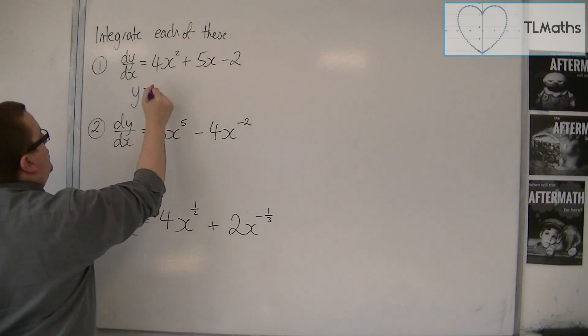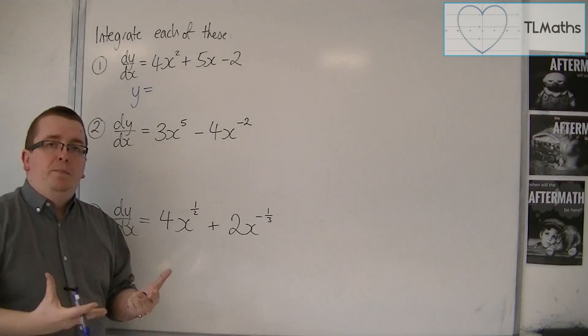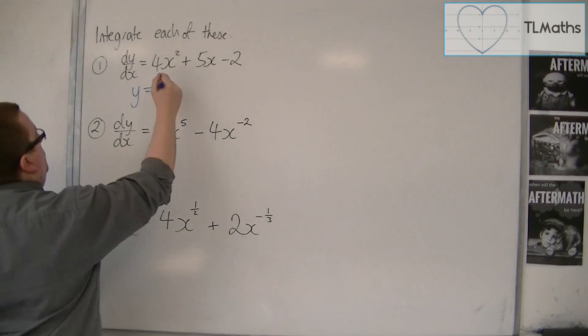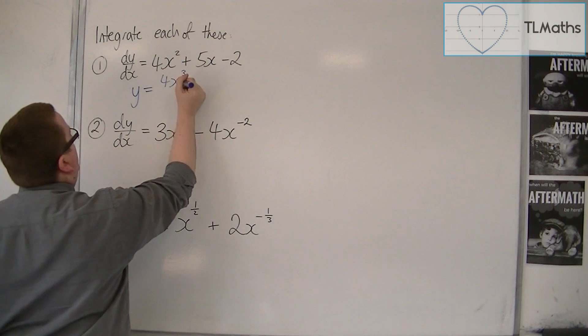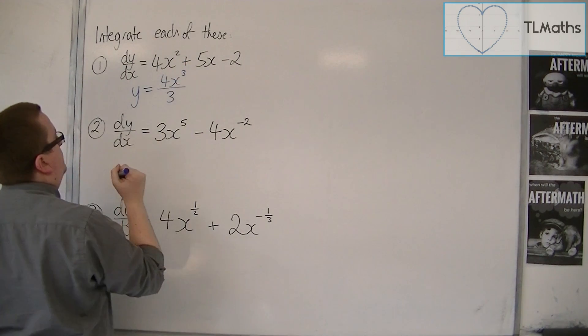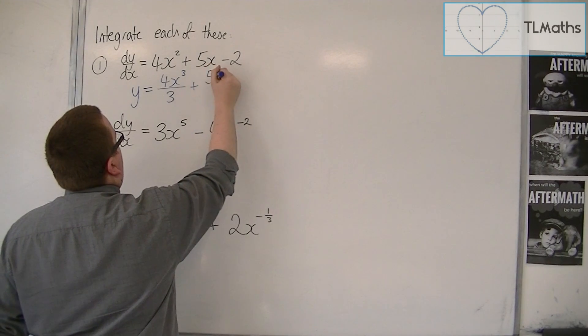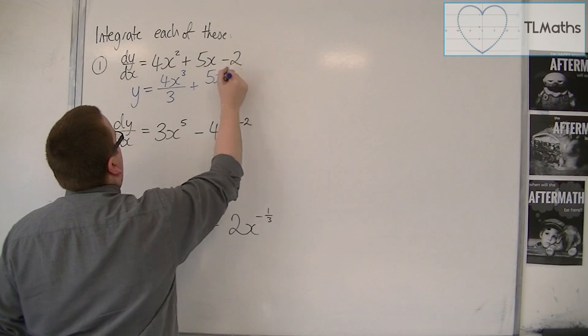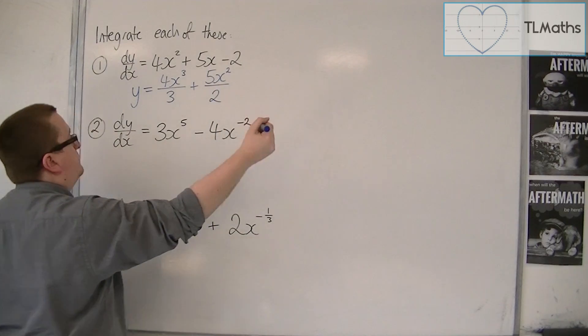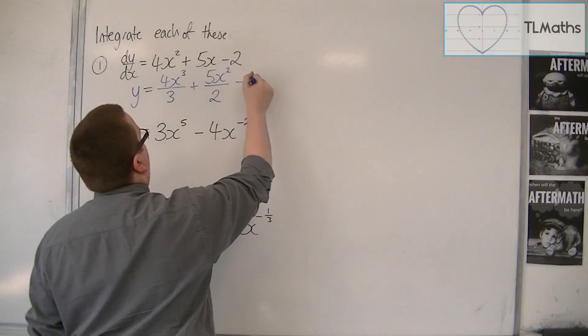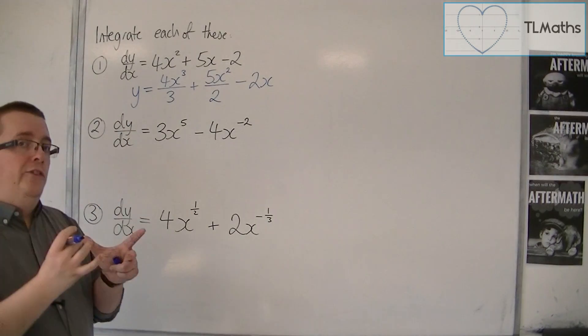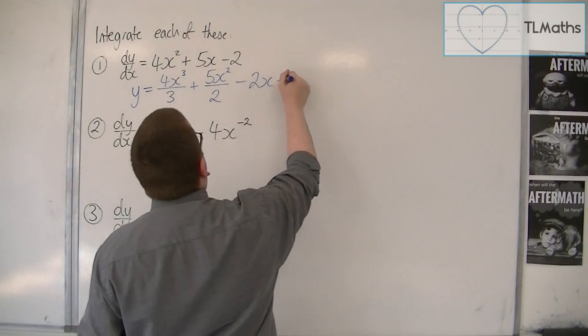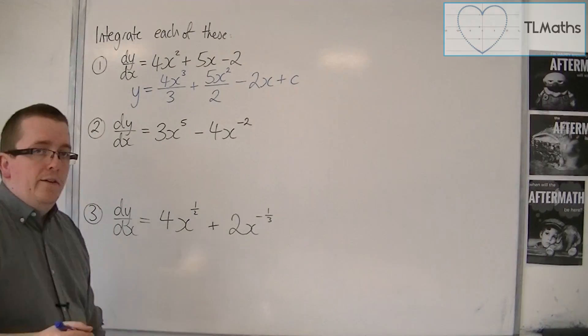We add 1 to the power and divide by the new power. So we're going to have 4x add 1 to the power, so we get 3 over 3, plus 5x add 1 to the power, divide by the new power. The minus 2 integrates to minus 2x. And then, of course, we have that constant of integration, that plus c added on the end.